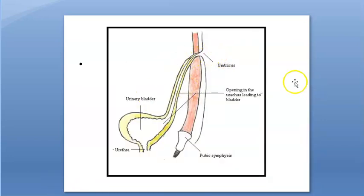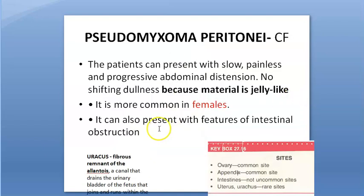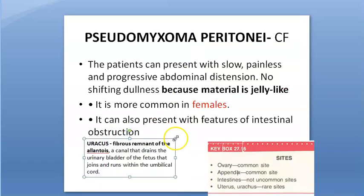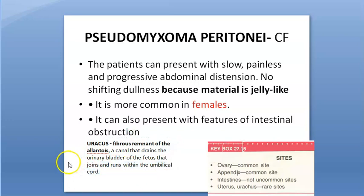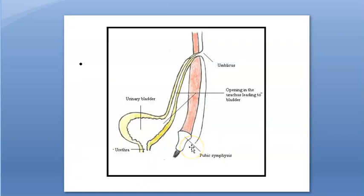What is the urachus? In the fetus, there is a connection from the umbilicus to the urinary bladder via the urachus. The urachus is basically a remnant of the allantois — a canal that drains the urinary bladder of the fetus and runs with the umbilical cord. Deposits can also occur there.